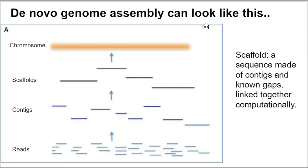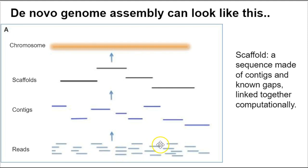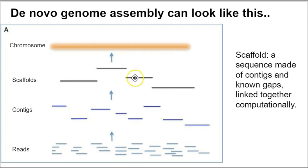De novo genome assembly can look like this. Here's your chromosome — that's where the sequence was originally derived from and what you're trying to get back to. Here are the reads from your Illumina sequencer — these could be paired-end reads. You're going to take those reads and algorithmically, computationally put them together into longer contiguous sequences referred to as contigs. Then you can also computationally connect these together into even longer fragments with some programs, and those fragments are called scaffolds. If you have enough of these and enough information, you might be able to get all the way back to the intact chromosome.